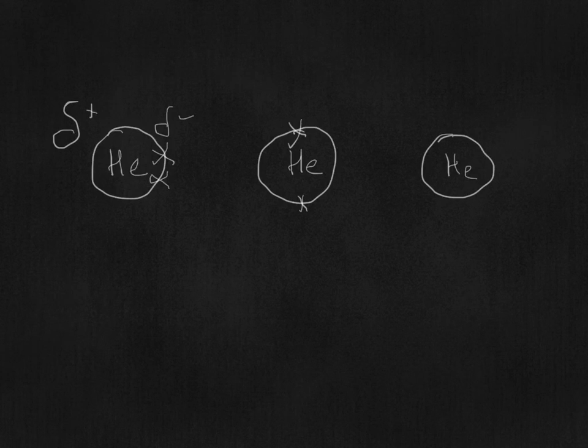Now what that could do is if that was near an atom, such as this one over here, it would push these electrons, it would move them to the opposite side of the atom, because the electrons repel each other, and that atom would end up looking like that.